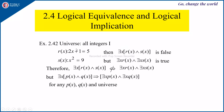Now consider an example. Suppose the universe is the set of all integers, and r(x) is given by 2x + 1 = 5, and s(x) is x² = 9. Then you can observe that ∃x[r(x) ∧ s(x)] is false, because for r(x) to be true, x = 2 (since 2×2+1 = 5). However, s(x) for x = 2 does not satisfy that condition. Therefore, ∃x[r(x) ∧ s(x)] is false.